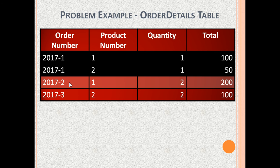Another Order Number, 2017-2, has only Product 1 but the quantity is 2, so the total is $200. The third order, 2017-3, has only Product Number 2 with a quantity of 2. Each Product Number 2 is $50, so the total is $100.